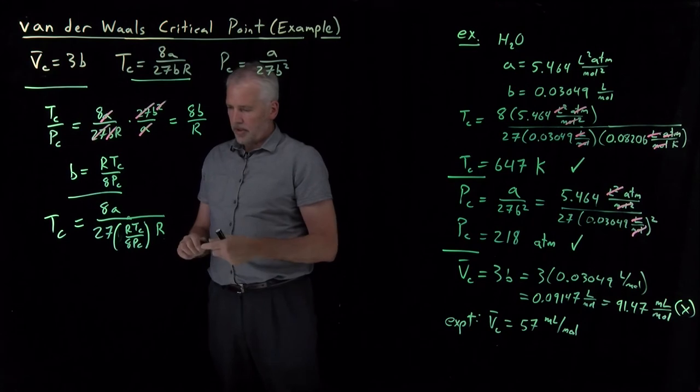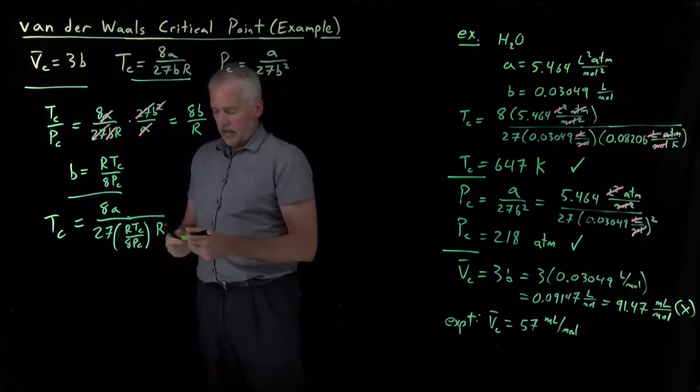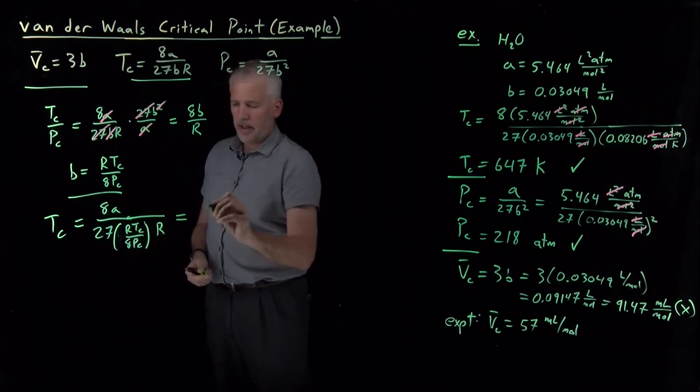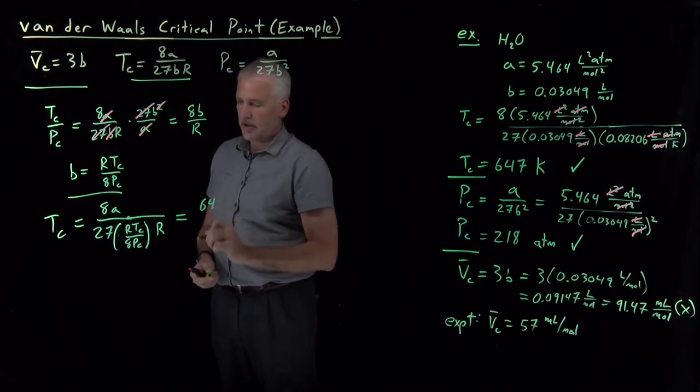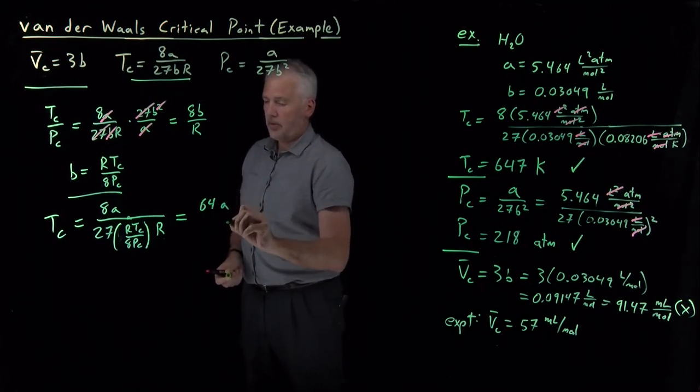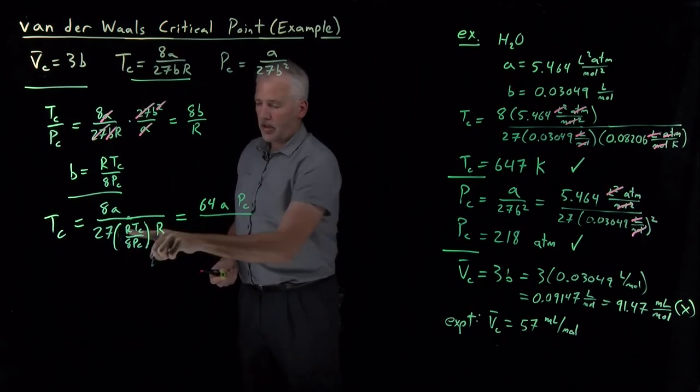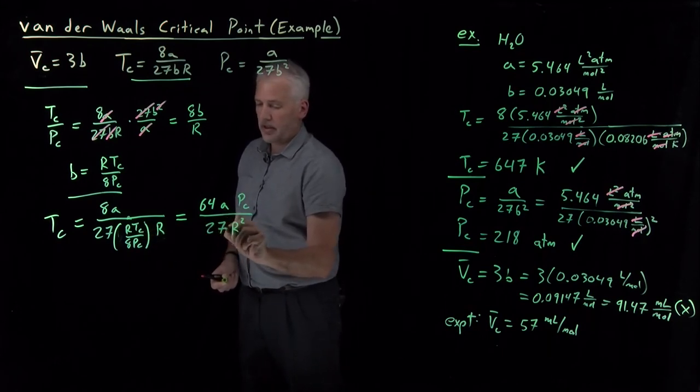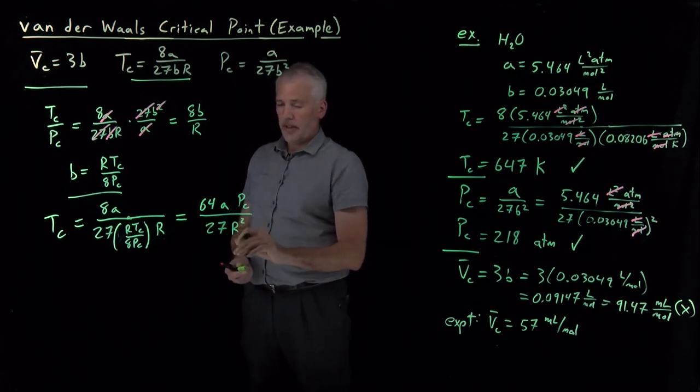Then let's see what happens here. We've got 8 divided by 1 over 8, that gives me a 64 in the numerator, an A in the numerator, a PC in the numerator, I've got an R and an R in the denominator, and 27 in the denominator. So if I rearrange that expression, solving for A.